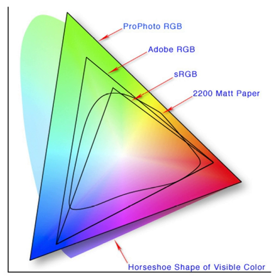For example, Adobe RGB and sRGB are two different absolute color spaces, both based on the RGB color model. When defining a color space, the usual reference standard is the CIELAB or CIEXYZ color spaces, which were specifically designed to encompass all colors the average human can see.